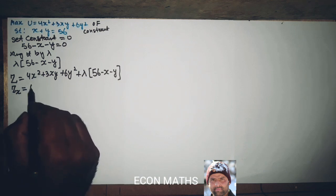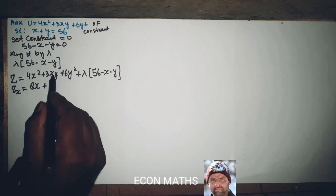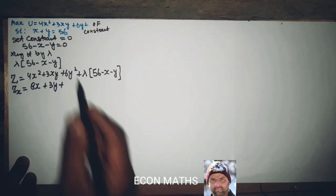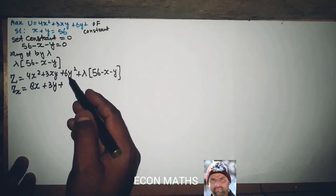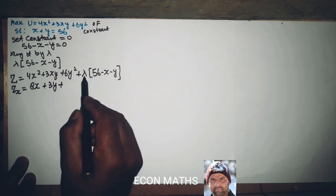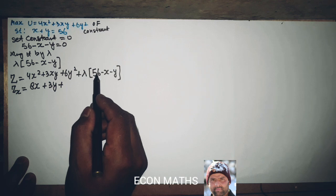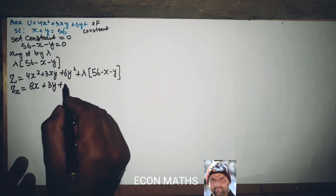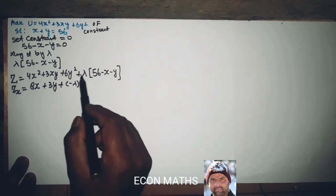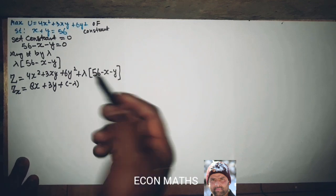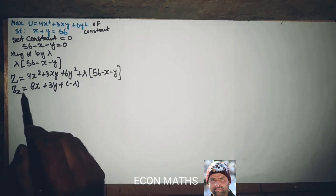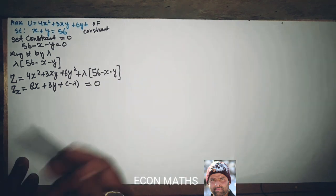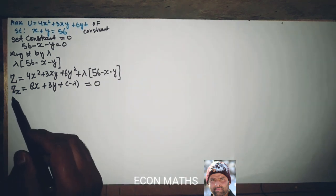Differentiating with respect to x: the derivative of 4x squared is 8x, plus the derivative of 3xy with respect to x is 3y, plus the derivative of 6y squared with respect to x is zero, plus lambda times 56 gives zero, and lambda times minus x gives minus lambda. We set this equal to zero: 8x plus 3y minus lambda equals zero.